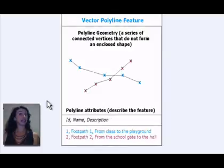A polyline is a sequence of vertices that are connected. Examples of polyline features are rivers, roads, railways, contour lines, and so on. Each polyline feature also has attributes. For example, a path feature may have an attribute name, which tells us the path's name, and a description, which tells us more about it.